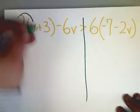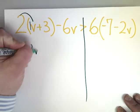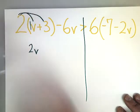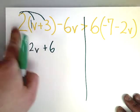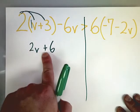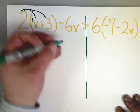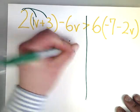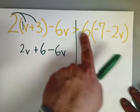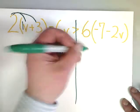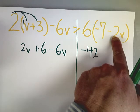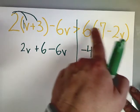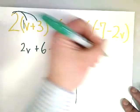Now, I need to do distributive property. Baby goes bathroom. 2 times 1V would be 2V. 2 times 3 would be 6. I'm just looking at the fact that this is positive and this is positive for the plus. 6 times negative 7 is negative 42. 6 times negative 2 would be negative 12V.